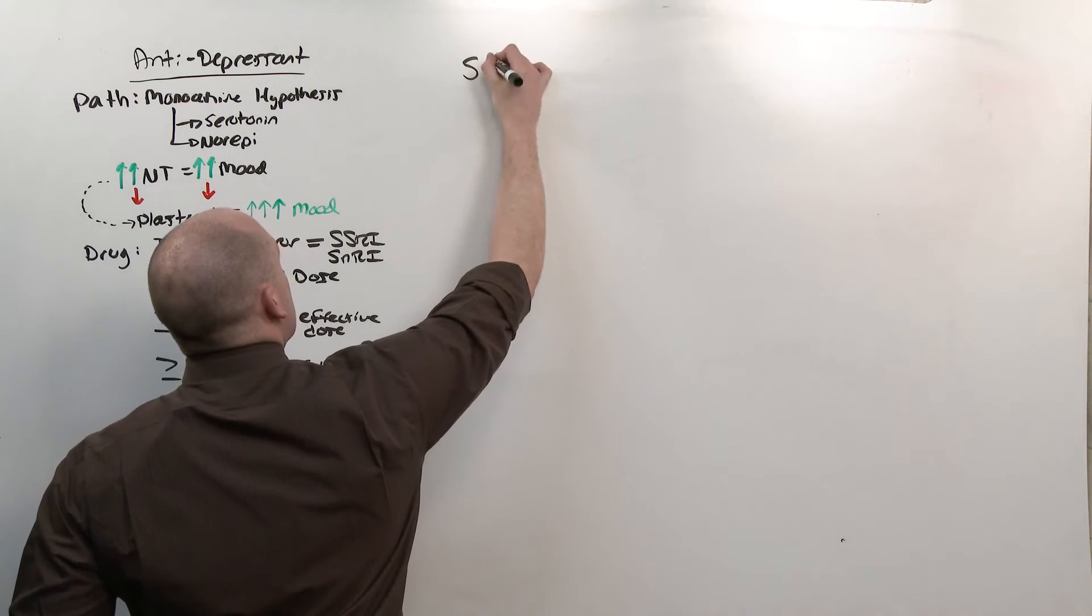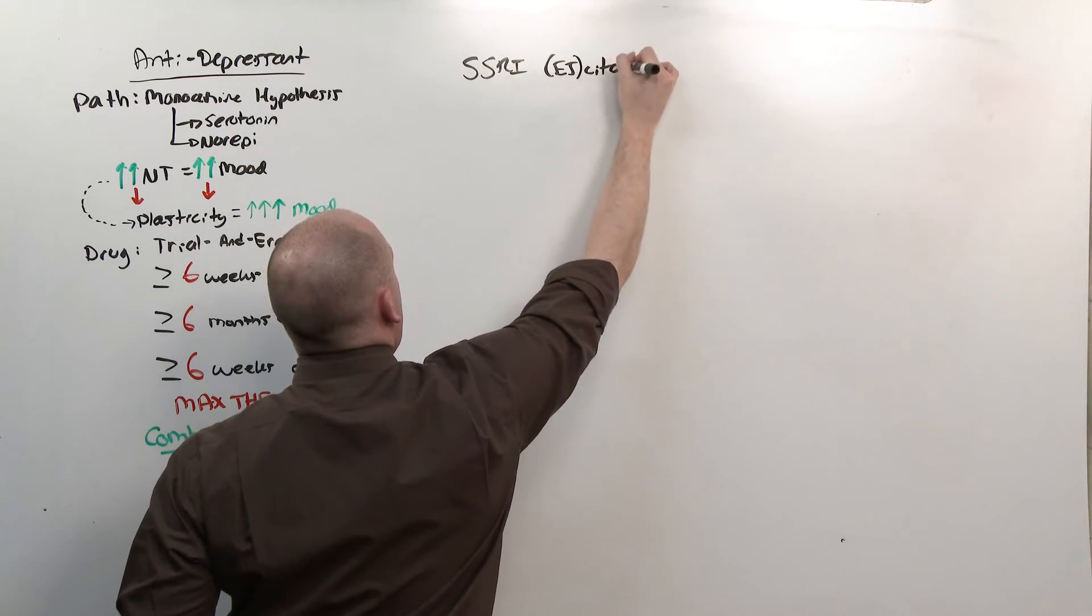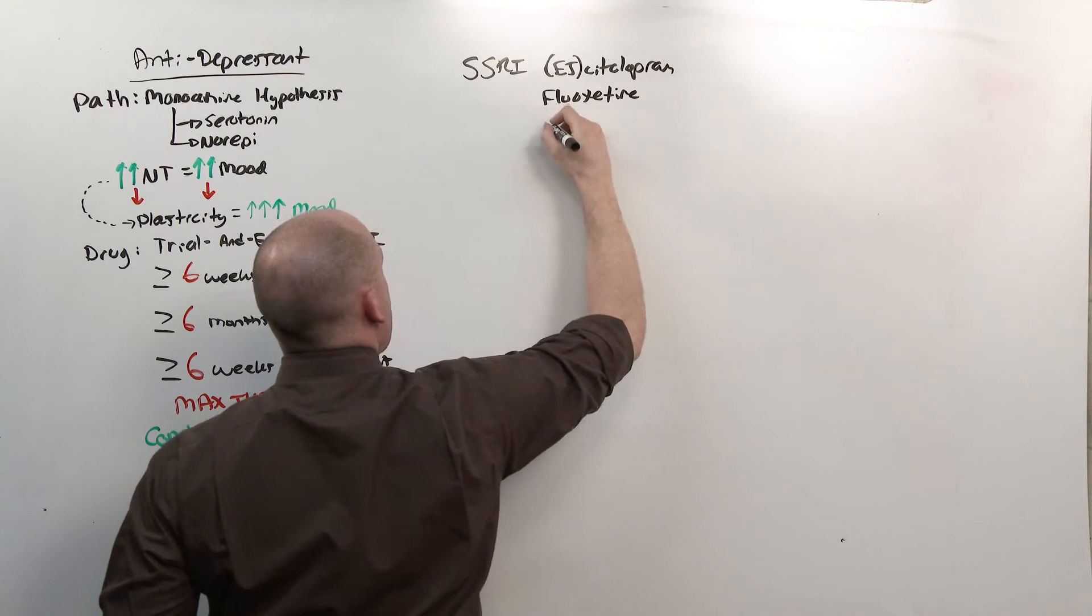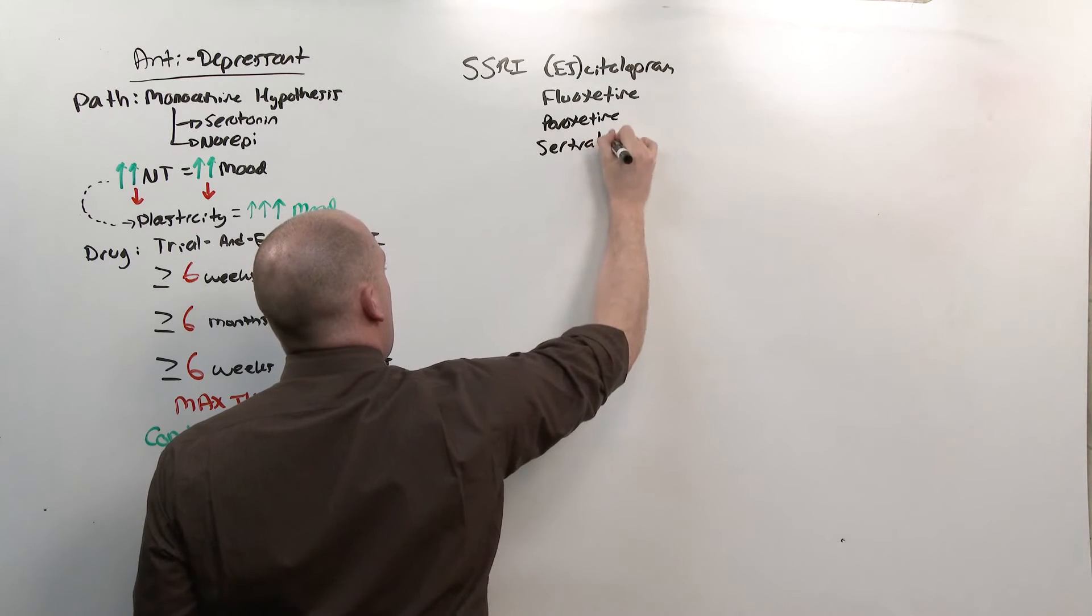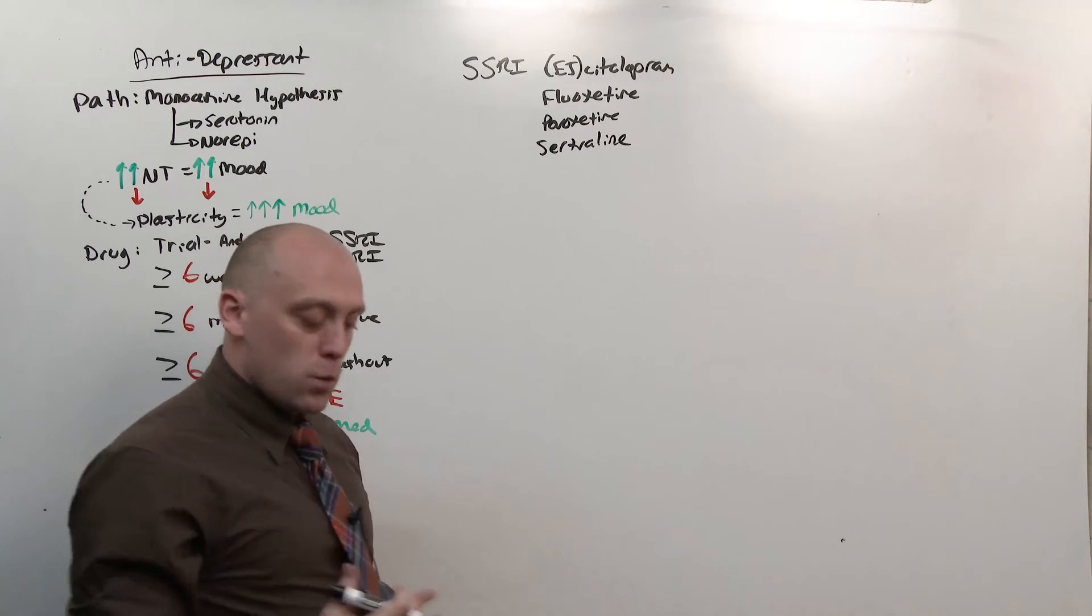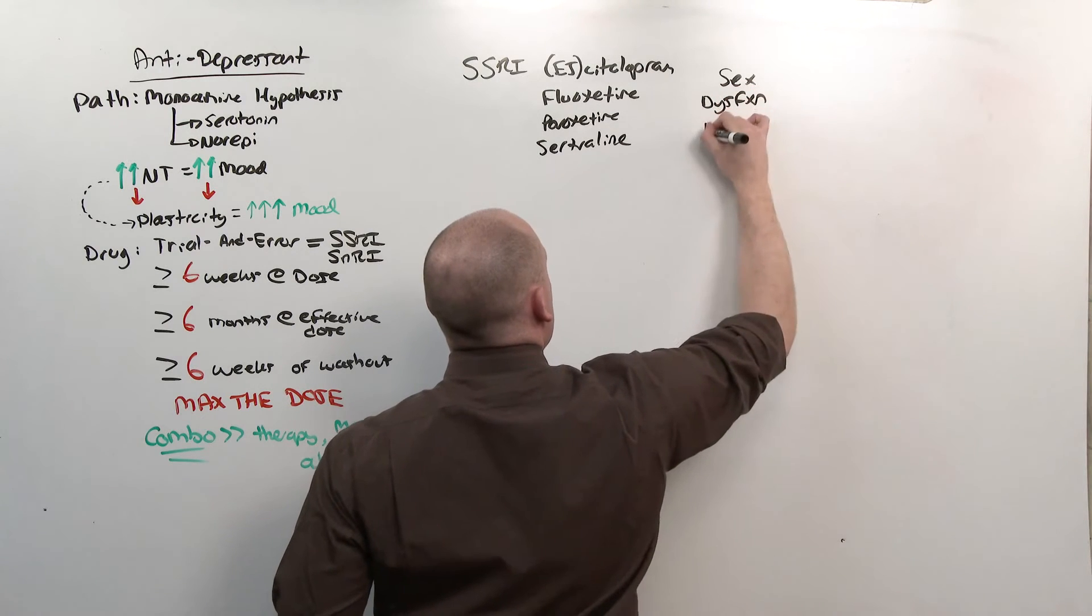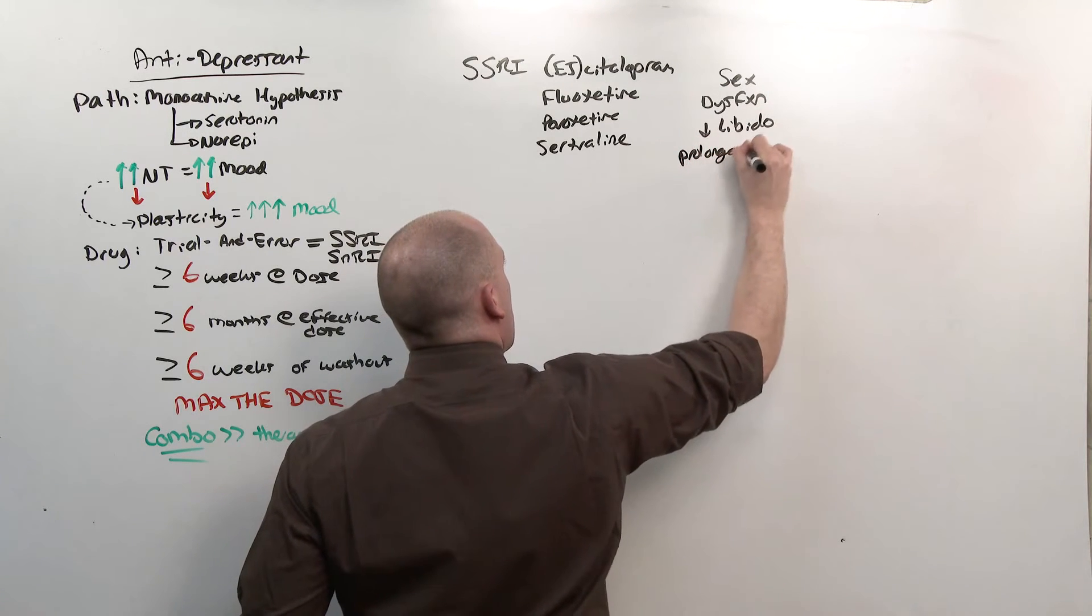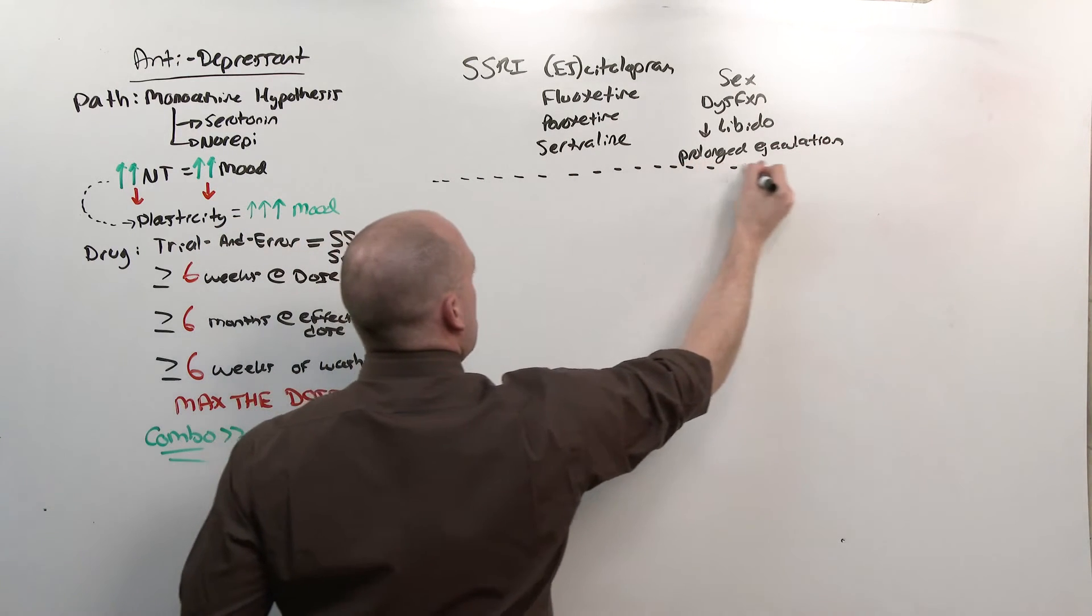The first class is the selective serotonin reuptake inhibitors, the SSRIs. And when I say SSRI, I think of escitalopram, fluoxetine, paroxetine, and sertraline. The SSRIs, they all have various side effect profiles, but the thing you should take away is sexual dysfunction. There may be a decreased libido, desire to have sex, but there may also be prolonged ejaculation. That is, these medications can be abused so that a man maintains his erection longer to continue sexual intercourse.